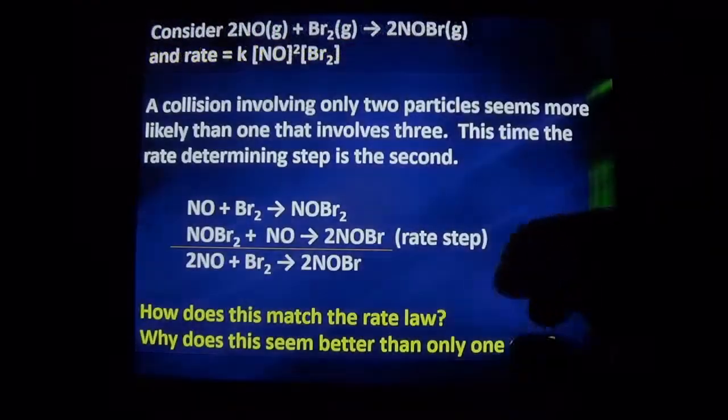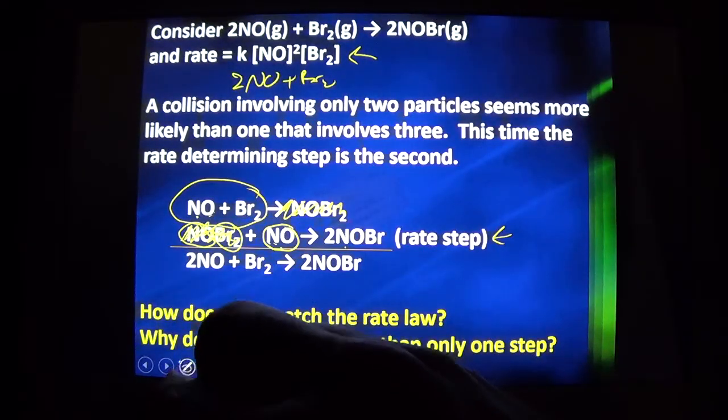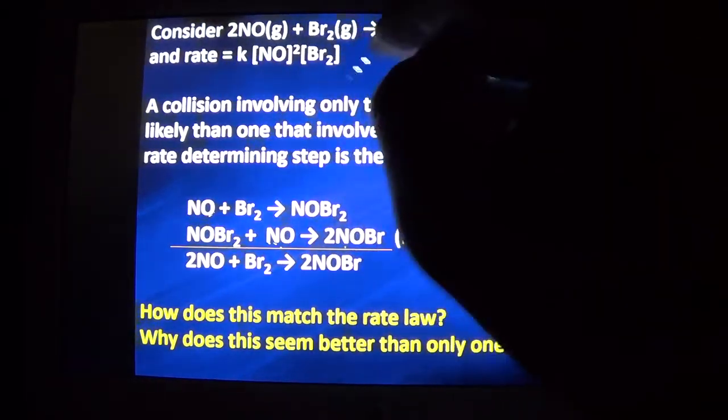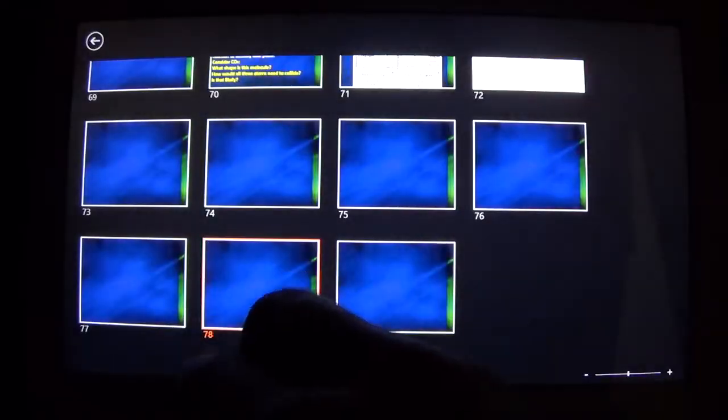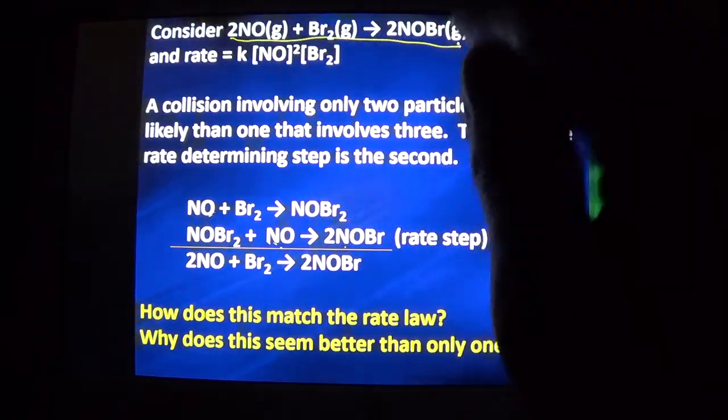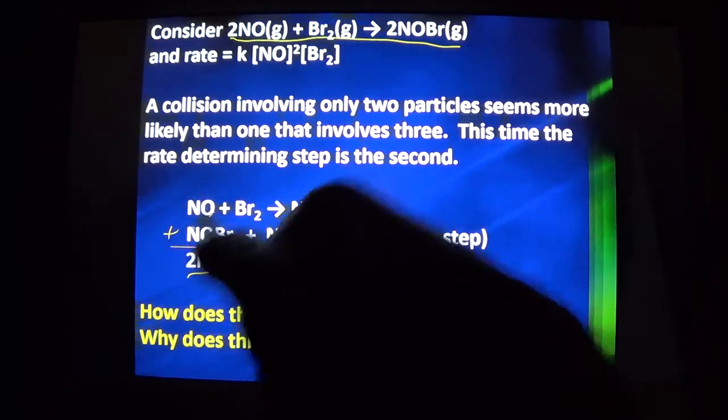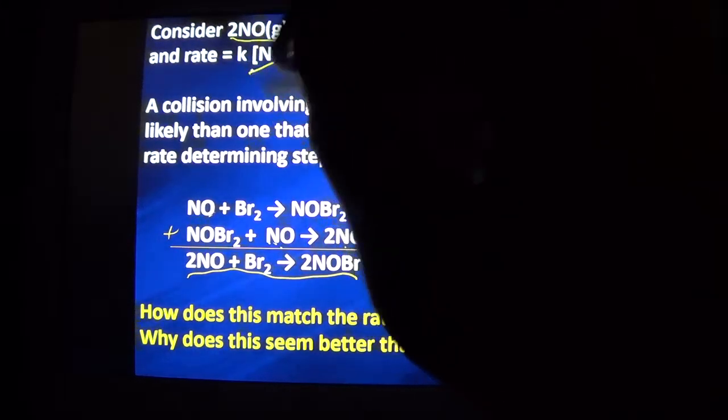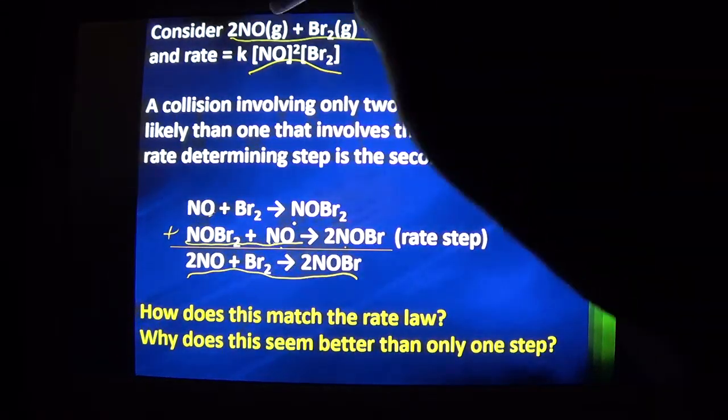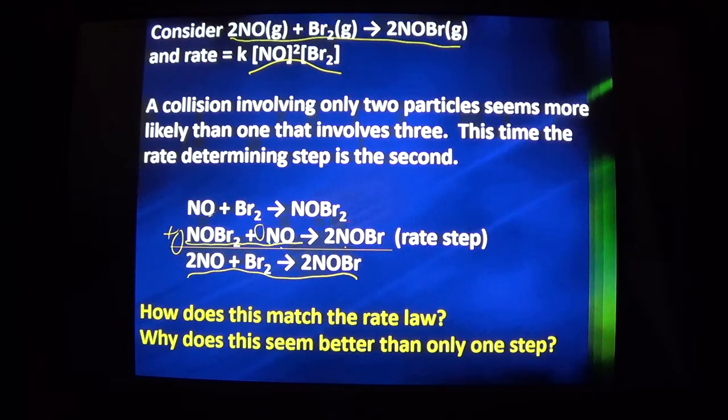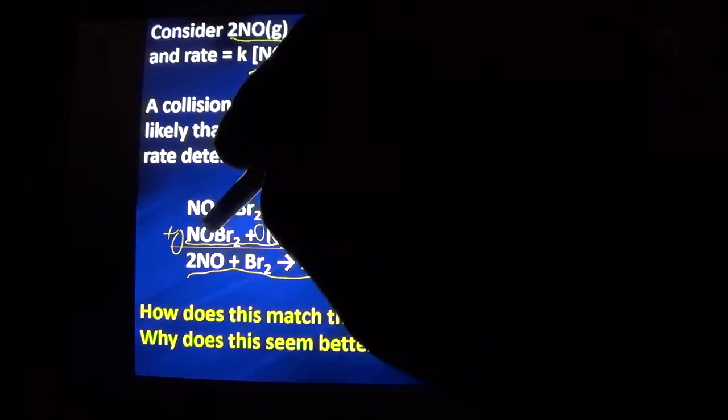That is it for reaction mechanisms. What makes for a good reaction mechanism, as far as we can tell, without years and years of study in lab? Your overall balanced equation is what you get when you add them up, when you add up all and cancel out what cancels. And the orders of your rate law will match the coefficients in your rate determining step, your slow step, your rate limiting step.